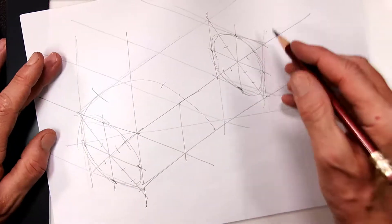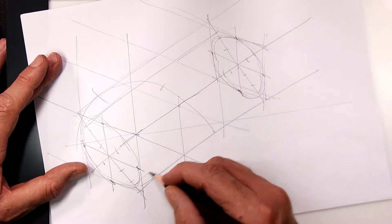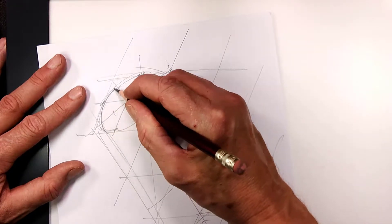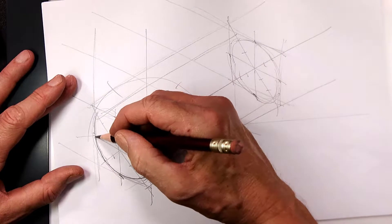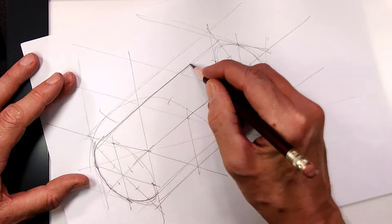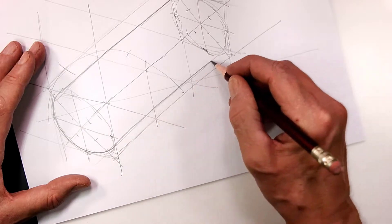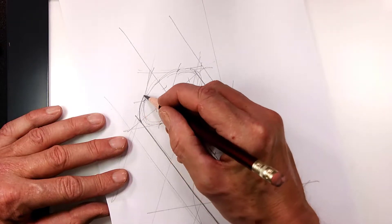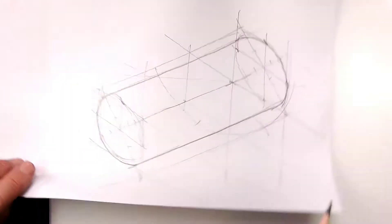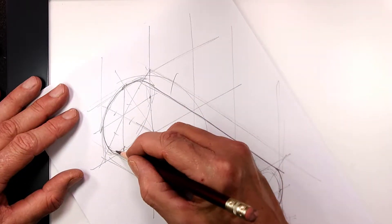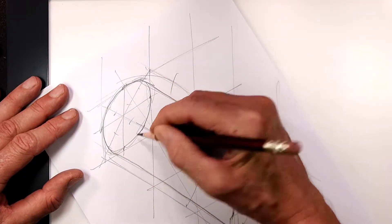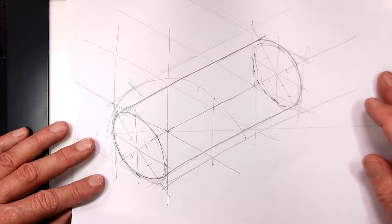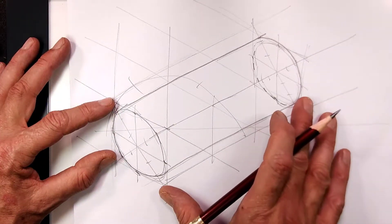And if this were a cylinder, it would look like this. And notice this ellipse is not perfect back here, but that's okay. We can make an adjustment. So now we have a cylinder that is one unit diameter and is three units long.